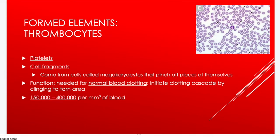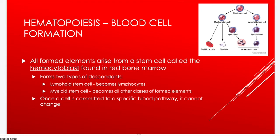The last formed element is thrombocytes, or platelets — tiny cell fragments visible as small dots in blood smear images. They come from cells called megakaryocytes, which pinch off little pieces of themselves to become platelets. Their function is to help clot blood. There are 150,000–400,000 platelets per drop of blood.